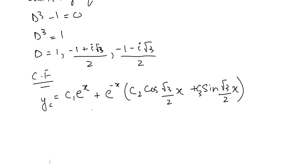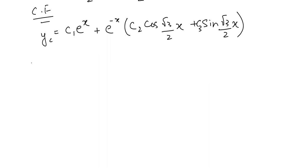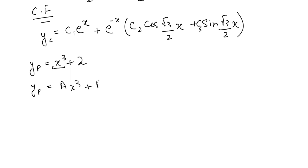For the particular solution, we have y_p corresponding to x³ + 2. Using the method of undetermined coefficients, since we have a cubic term, we write y_p as Ax³ + Bx² + Cx + D, where D represents the constant (absorbing the 2).